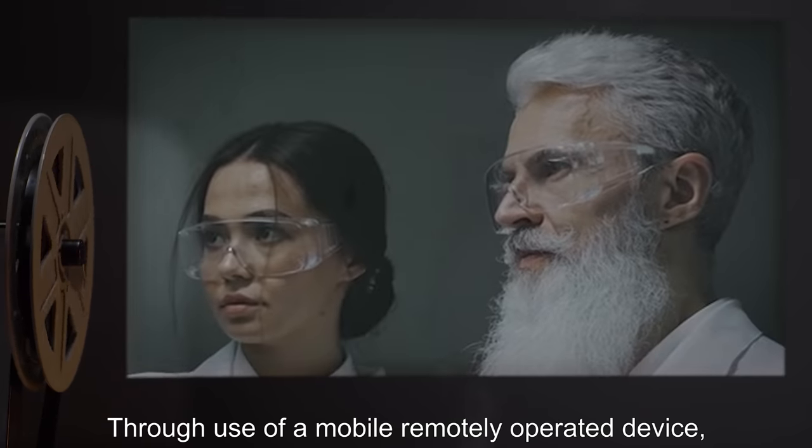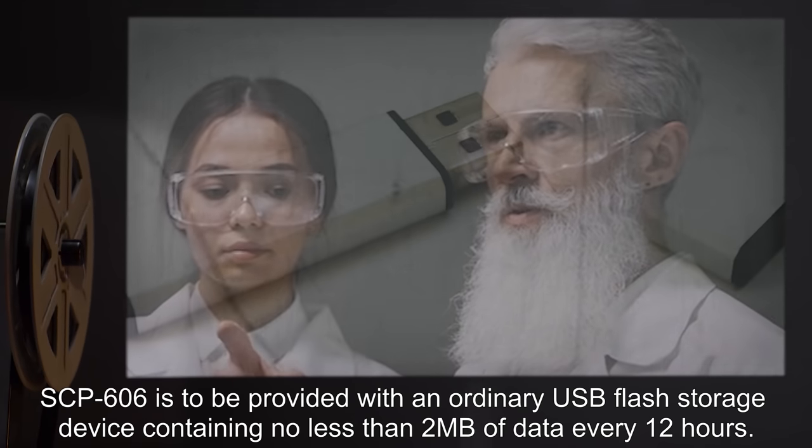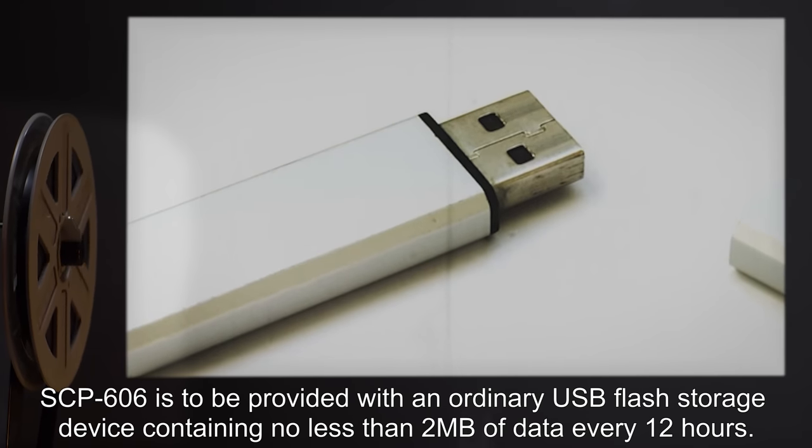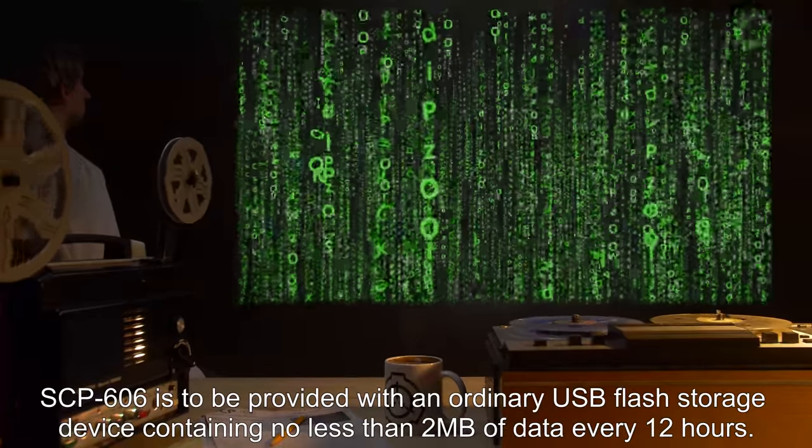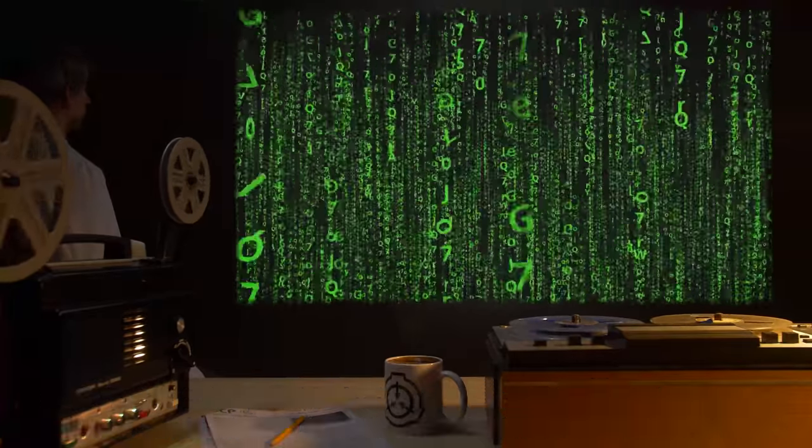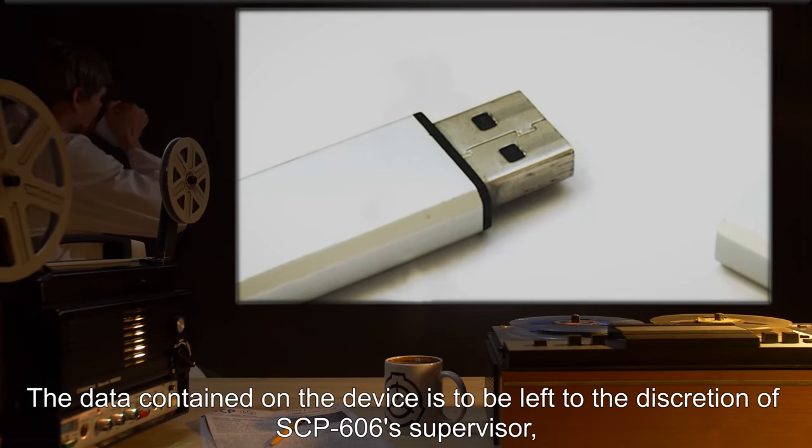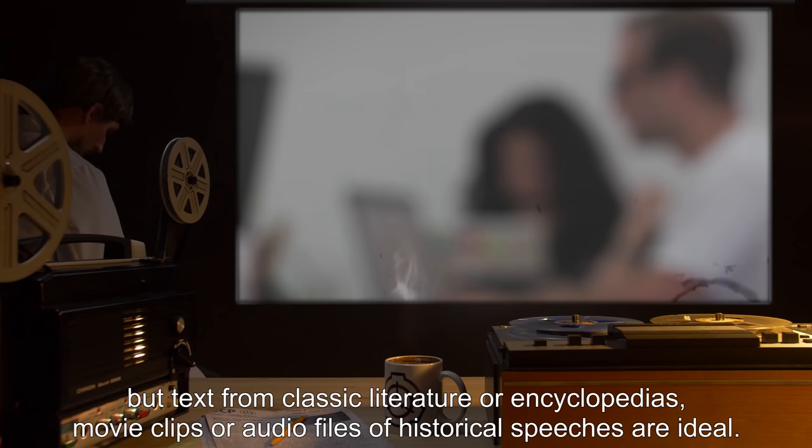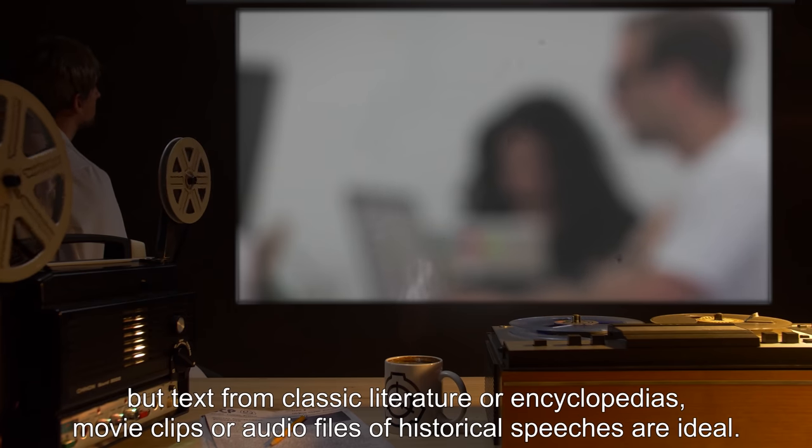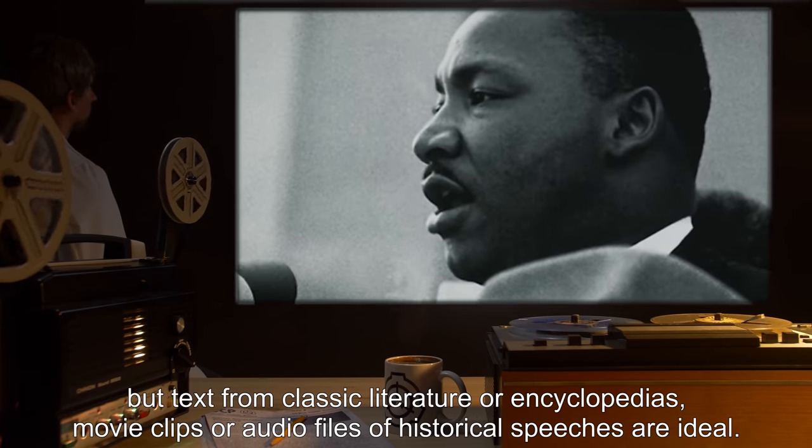Through use of a mobile remotely operated device, SCP-606 is to be provided with an ordinary USB flash storage device containing no less than 2 megabytes of data every 12 hours. The data contained on the device is to be left to the discretion of SCP-606's supervisor, but text from classic literature or encyclopedias, movie clips, or audio files of historical speeches are ideal.